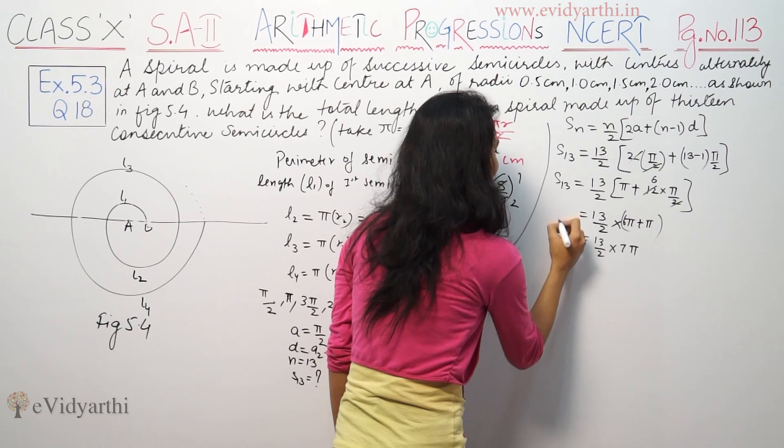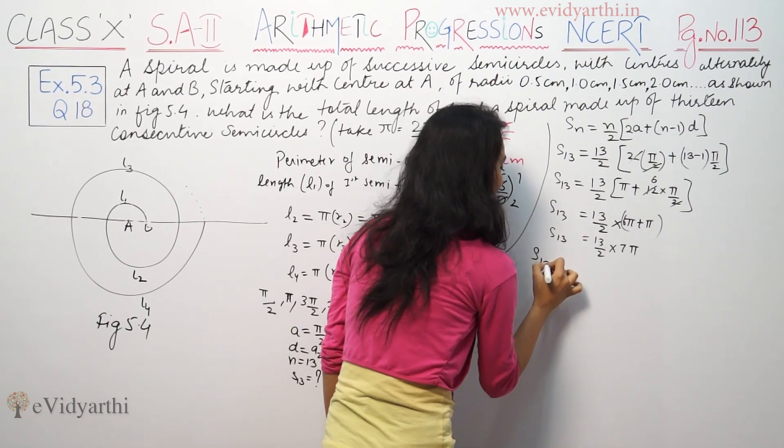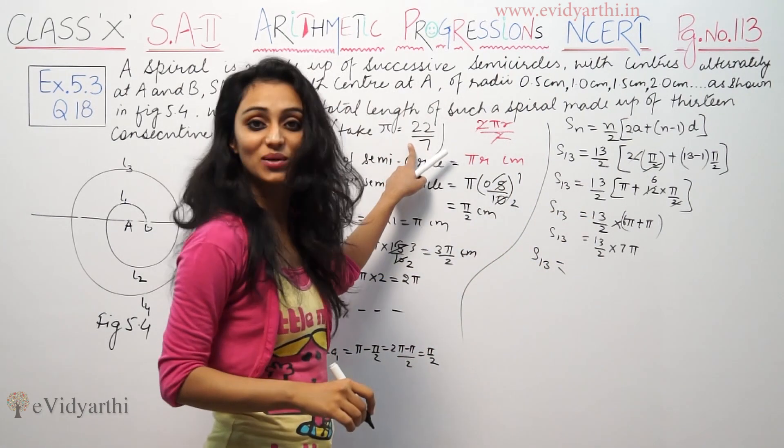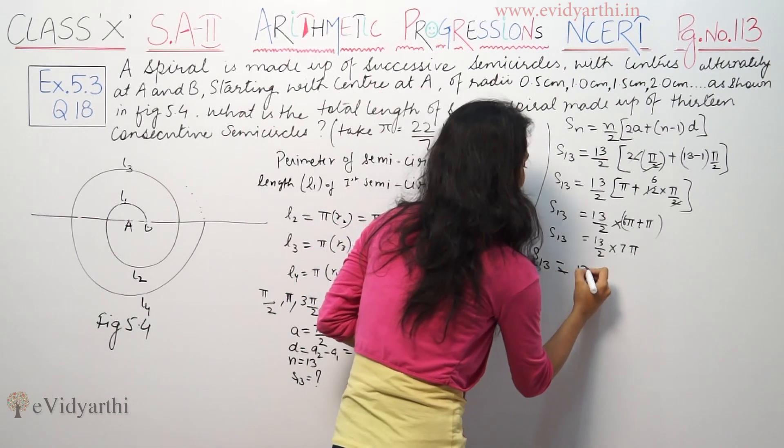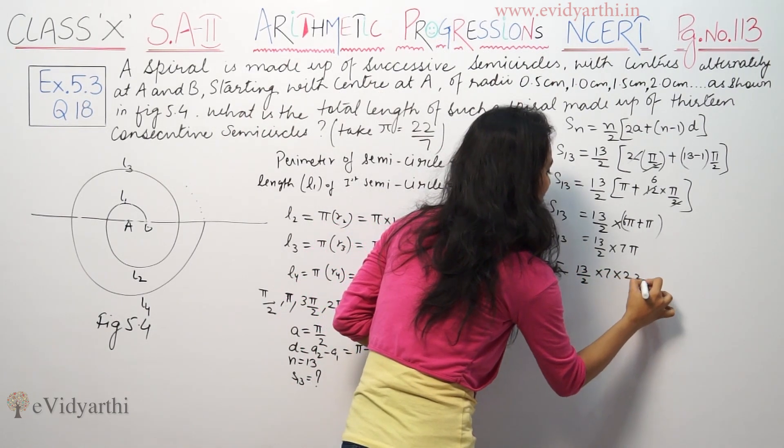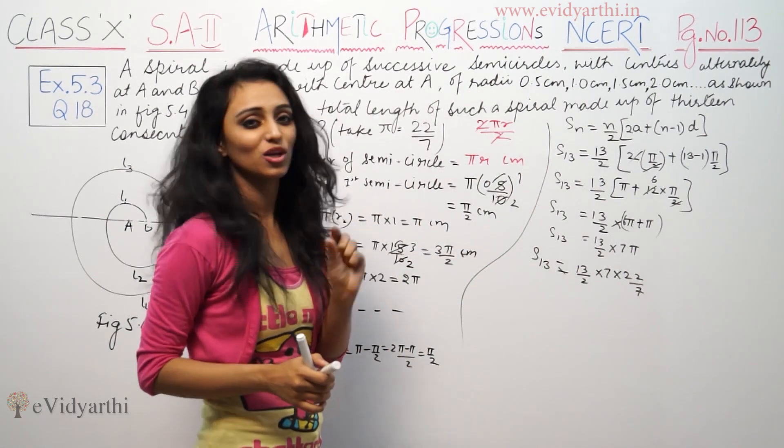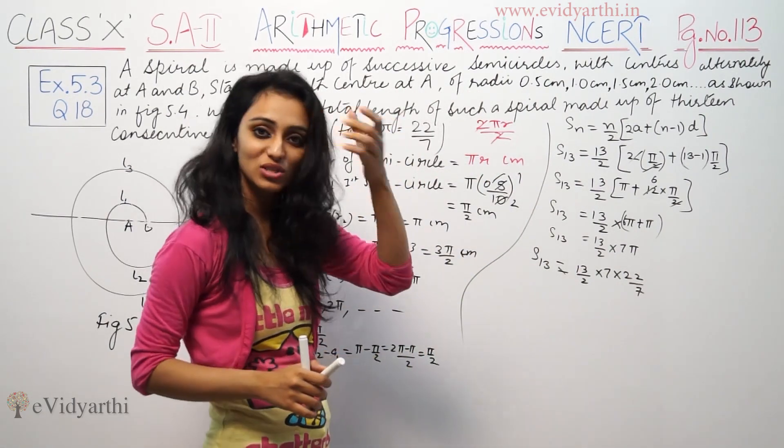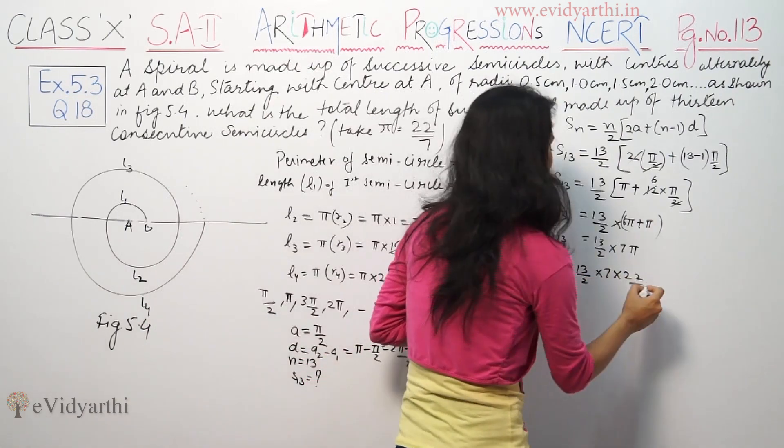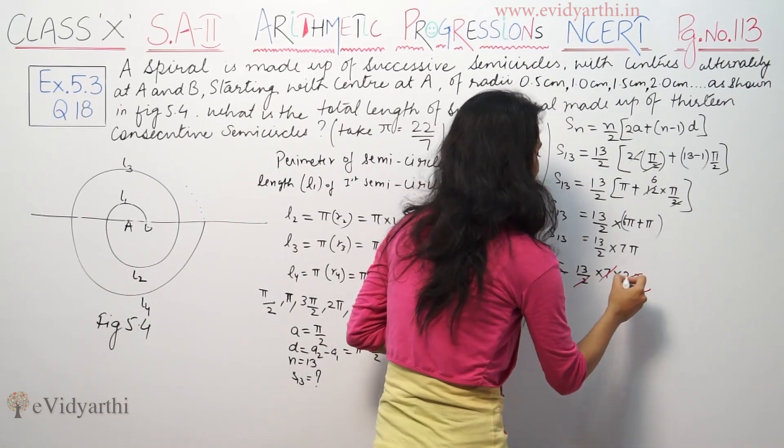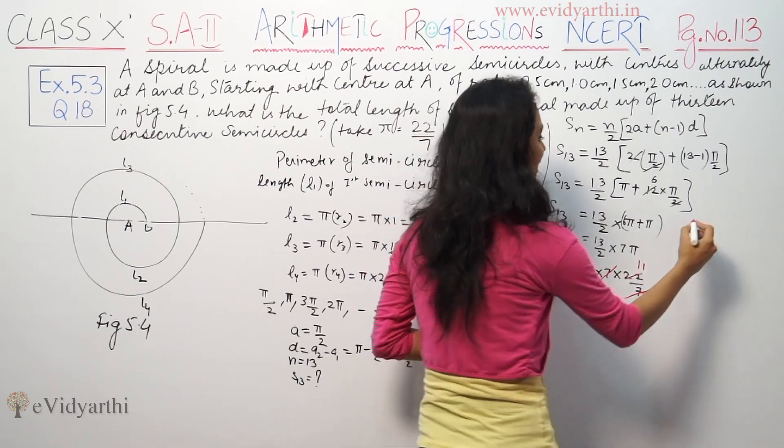So S13, we put π as 22/7. So 3/2 into 7 into 22/7. 7 to 7 is cancelled, 13 into 11.